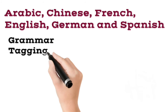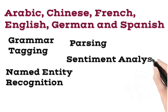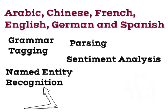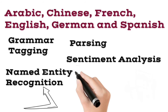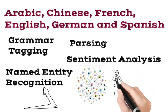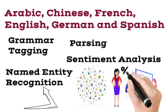Grammar tagging, named entity recognition, parsing, sentiment analysis and other language tools are all part of Core NLP. Here we find one important concept: named entity recognition — what does it mean? Named entity recognition classifies unstructured text into predefined categories such as person, name, organizations, locations, percentages, etc.